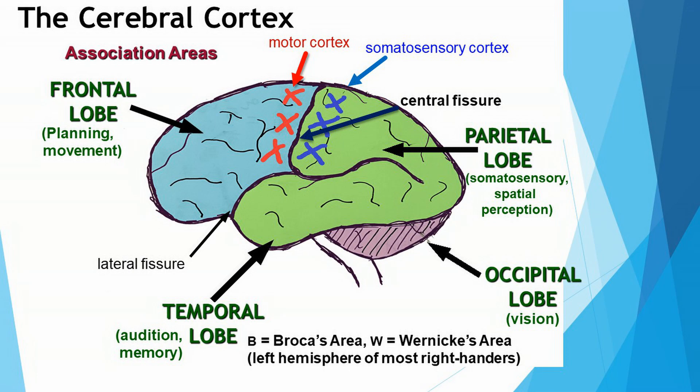Looking at this diagram, you can see some important landmarks. One is the central fissure, and the second is the lateral fissure. A fissure is an inward fold, and these fissures serve as landmarks. If someone is undergoing brain surgery, then the surgeon can, to some extent, know what part of the brain is where.